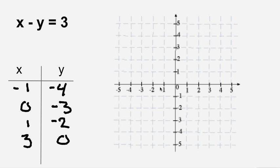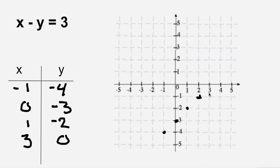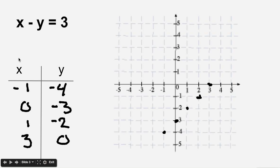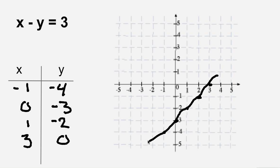If you plot these points on the graph — (-1, -4), (0, -3), (1, -2), (2, -1), and (3, 0) — you can see that this order of dots would make a line, which would run just like that. So this equation is a line, and you can see that it makes a line when it's graphed.